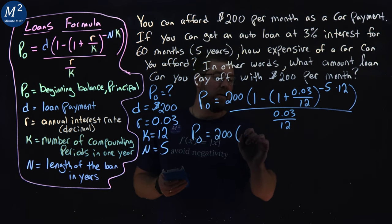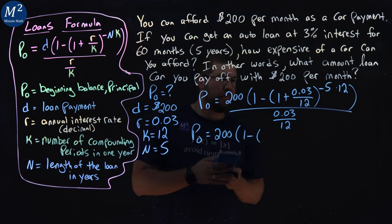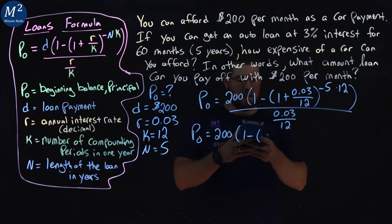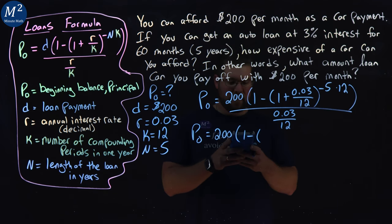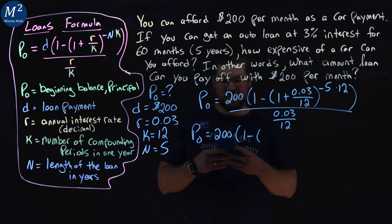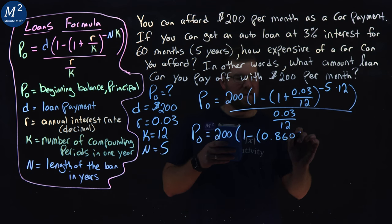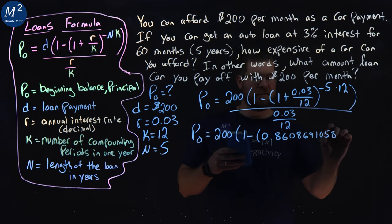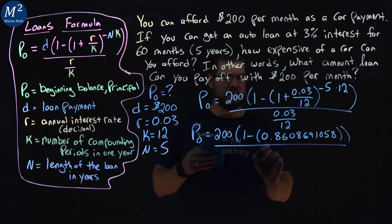200 times one minus here. Now I'm going to put all of this into one thing. We have 0.03 divided by 12 is 0.0025 plus one is 1.0025. And I'm raising that to a negative five times 12 power, that should be negative 60 power, which is 0.8608691058 all over 0.03 divided by 12, which is 0.0025.